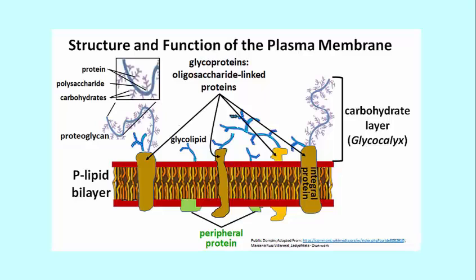Let's define the glycocalyx. It's nothing more than the carbohydrate or glycoprotein layer, most of which is covalently associated with the cell membrane, with the bilipid layer. You see here integral membrane proteins covalently linked to oligosaccharide sugars.